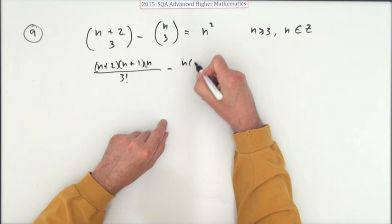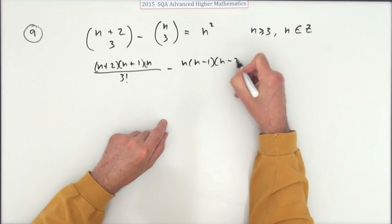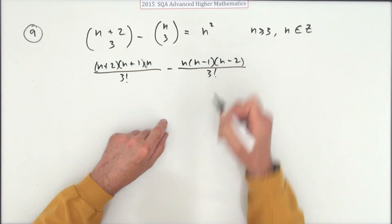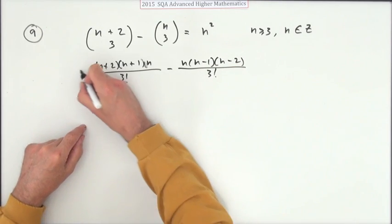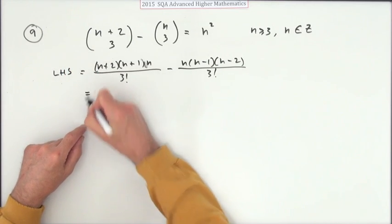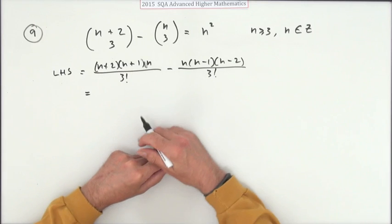And similar with that, it'll be n times n minus 1 times n minus 2 over 3 factorial. Maybe I should say this, left-hand side equals that. So that's the definition of the factorial.